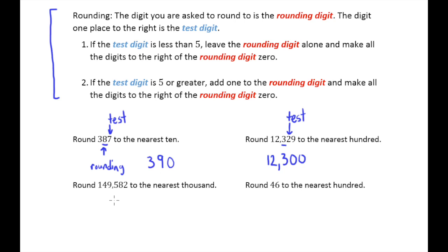Now these last two examples are kind of special cases that we'll look at that can be a little tricky. The first one here says round 149,582 to the nearest thousand. So the thousands place here, that's my rounding digit. And this, of course, is my test digit.